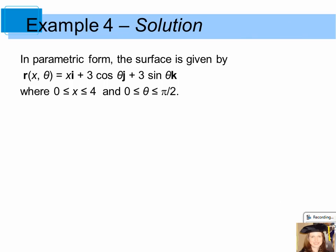Now in parametric form, the surface can be given as r of x theta equals xi plus 3 cosine theta j plus 3 sine theta k, where x is between 0 and 4 and theta is between 0 and pi over 2.